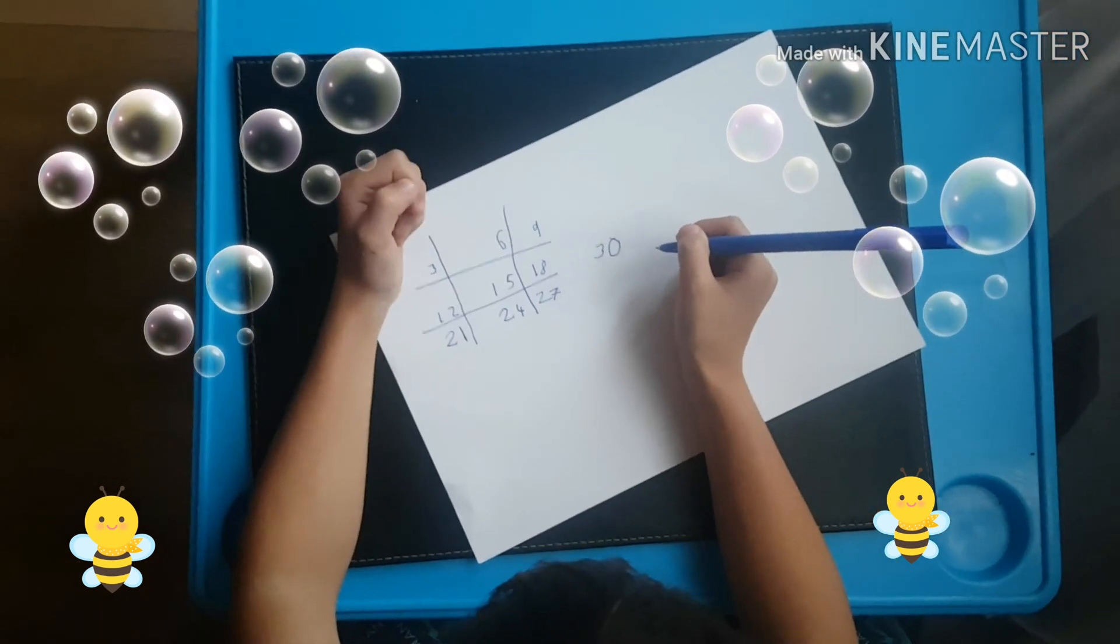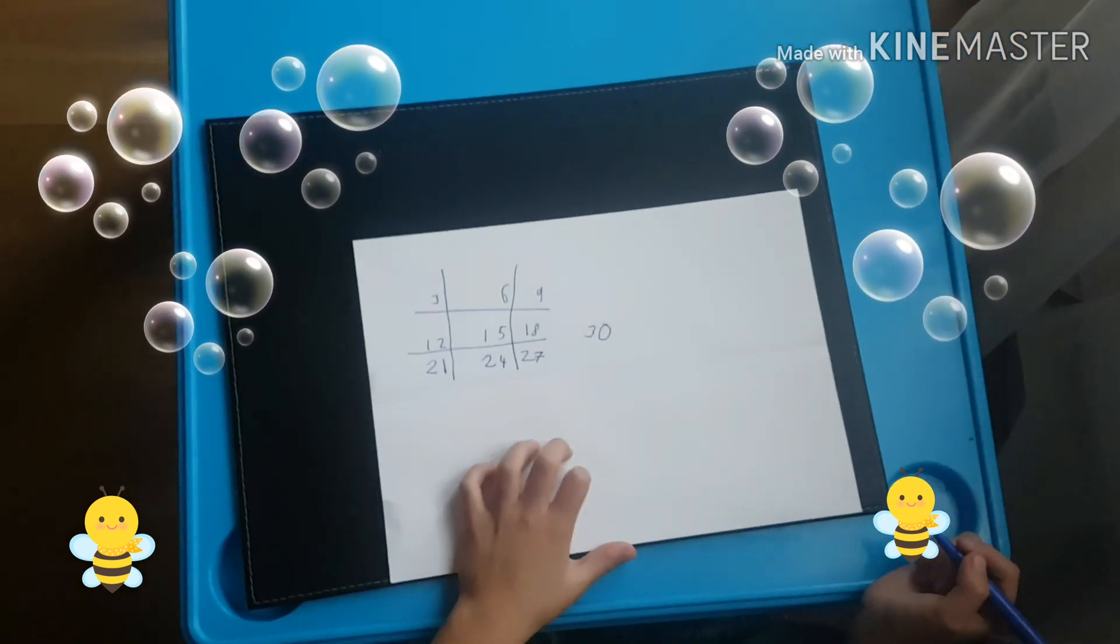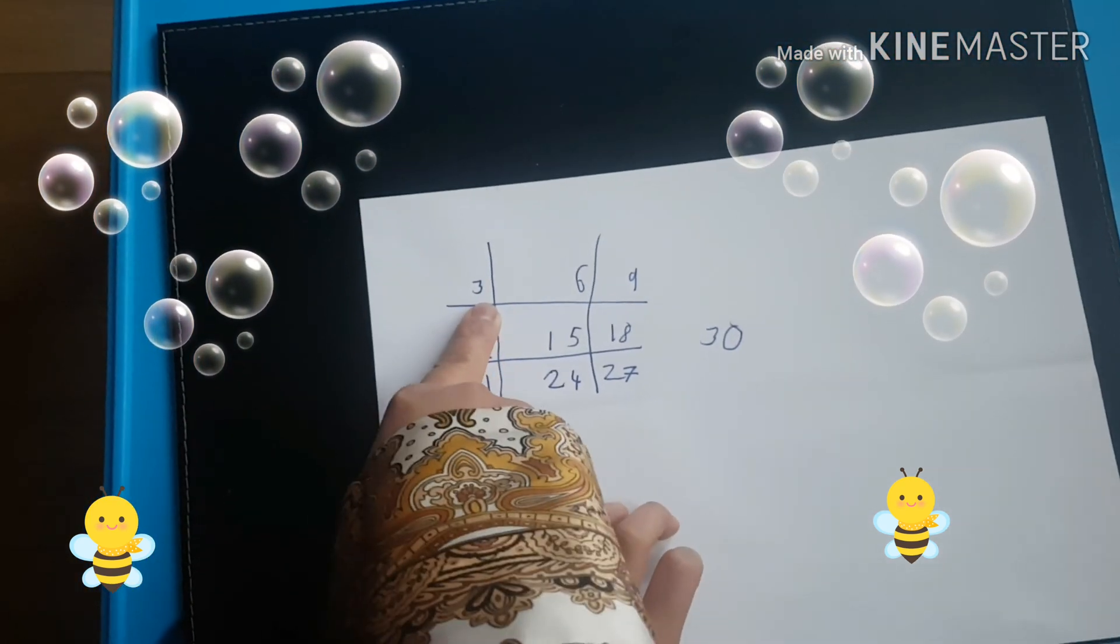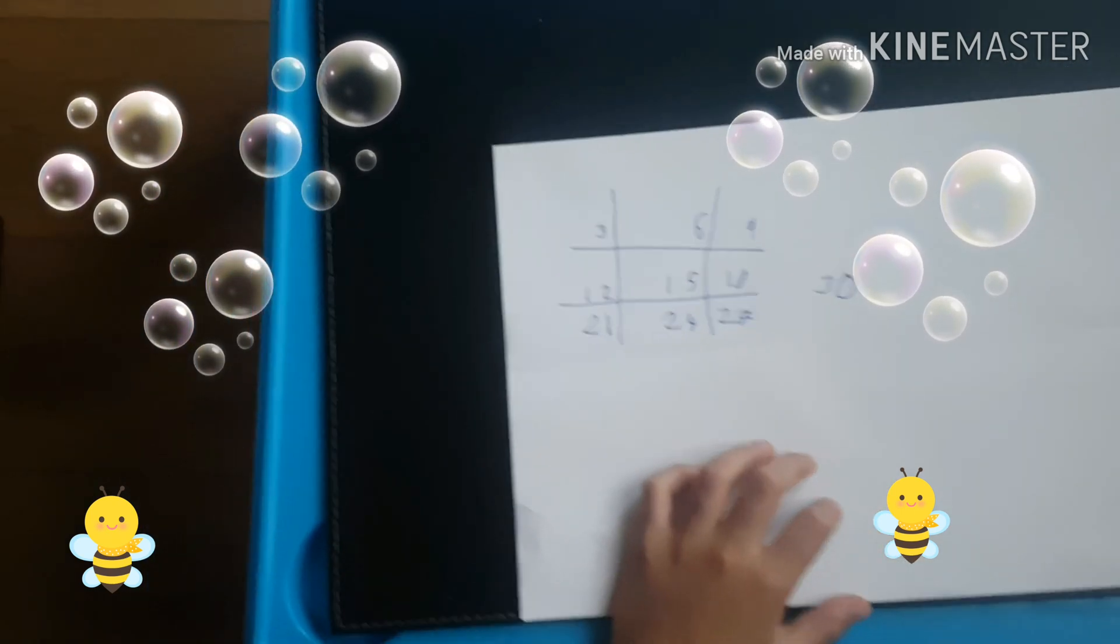And there you have it, the 3 times table. Okay, where is 3? This is 3 times 1 equals 3, 3 times 2 equals 6, 3 times 3 equals 9.